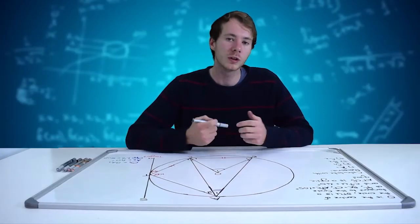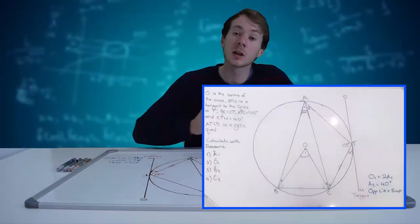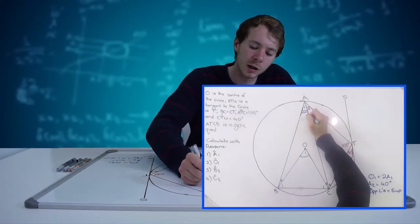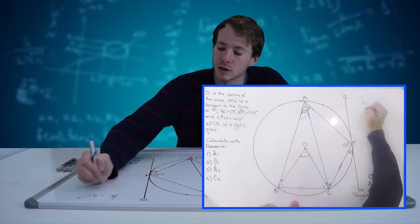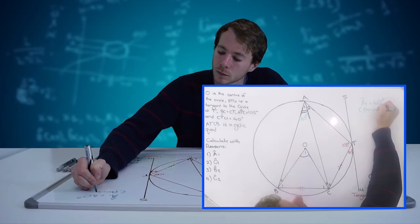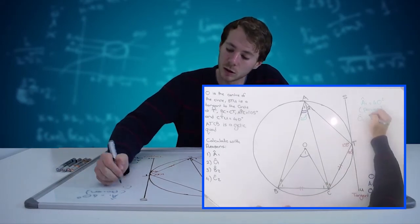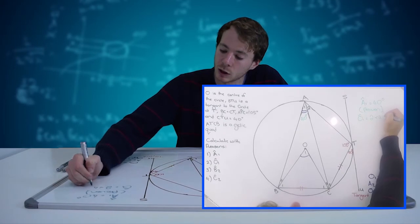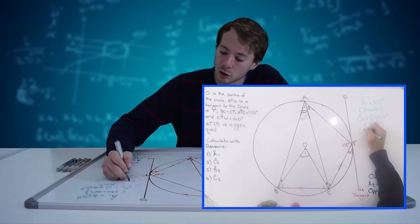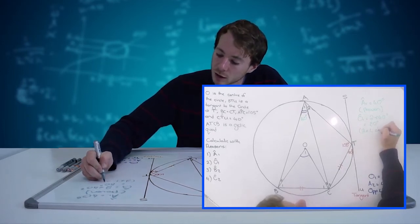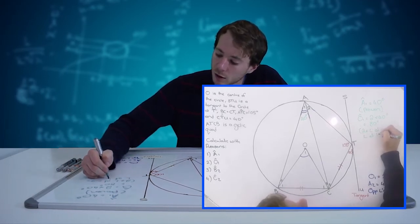Question 2 asks us to calculate the size of O1. We know that O1 is equal to 2 times A1, and we've already found that A1 equals 40 degrees. So O1 is equal to 2 times 40 degrees, which equals 80 degrees. The reason is: two times the angle at the circumference equals the angle at the center.